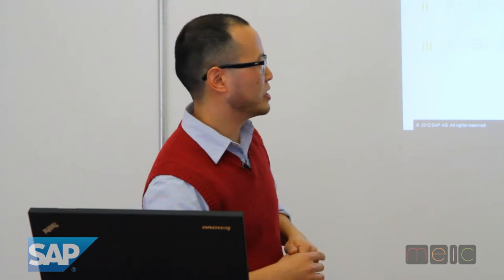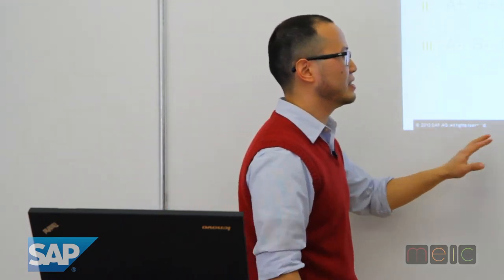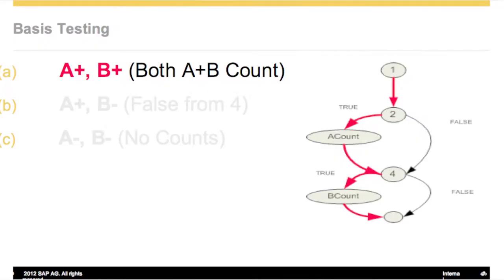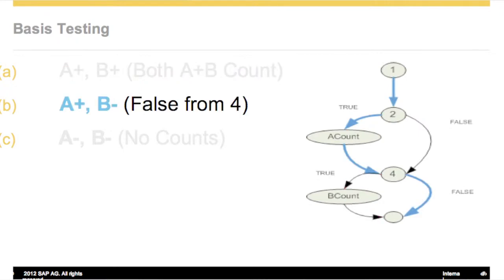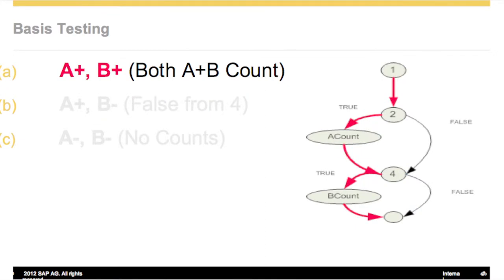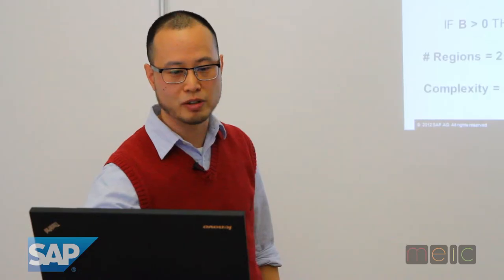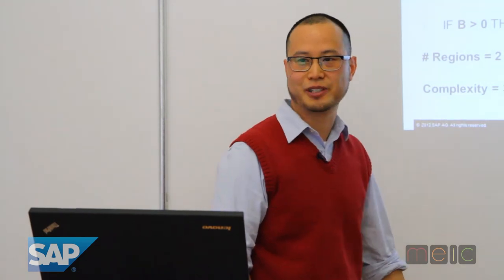Looking at the graphic — the first path you go through is a happy path. I have another path here, and another path here, and with these three cases I can cover everything. That happens to be mathematically supported — the complexity here is three.